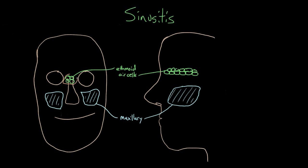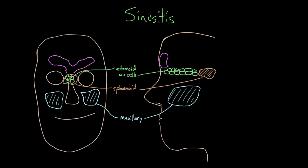Right behind the ethmoid air cells, and deeper back in your head, is a pair of larger sinuses called the sphenoid sinuses, and they live about right here. Another set of sinuses lives in your forehead, about right here — variable in shape, but kind of looks about like this — and these are called your frontal sinuses.